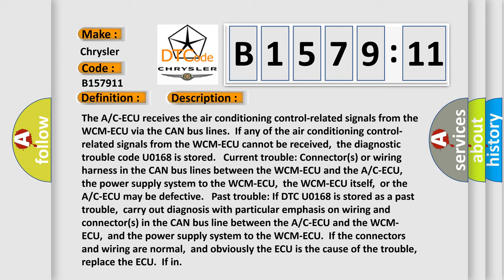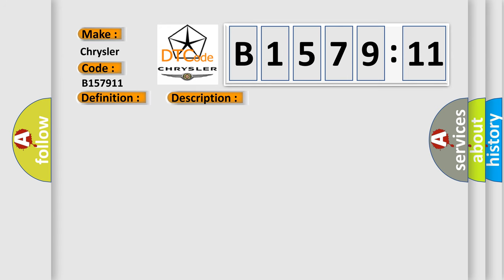or the A/C ECU may be defective. Past trouble: if DTC U0168 is stored as a past trouble, carry out diagnosis with particular emphasis on wiring and connectors in the CAN bus line between the A/C ECU and the WCM ECU, and the power supply system to the WCM ECU. If the connectors and wiring are normal, and obviously the A/C ECU is the cause of the trouble, replace the A/C ECU.